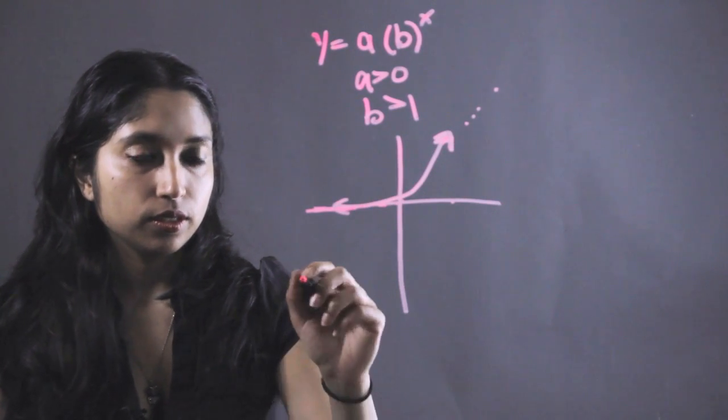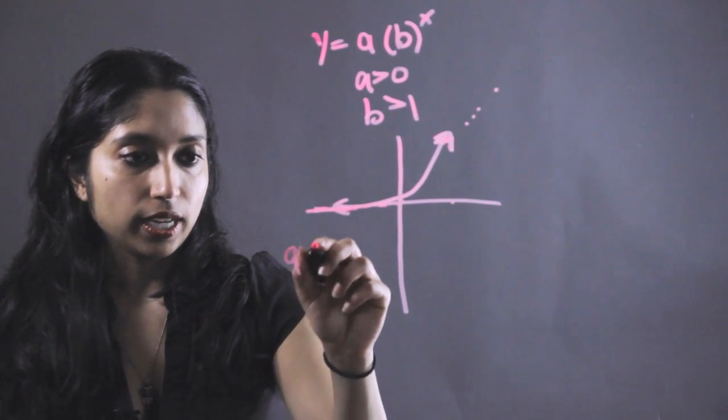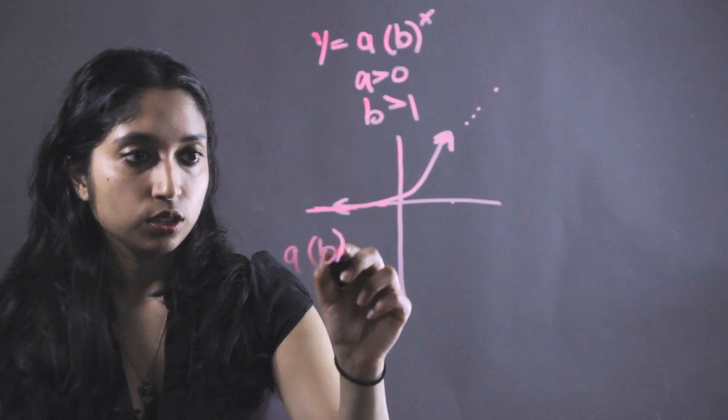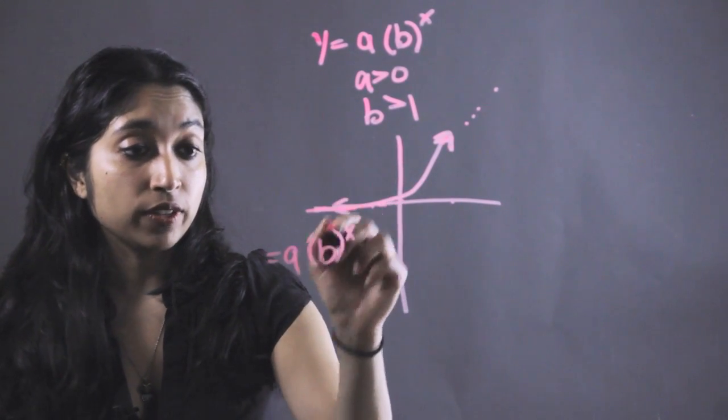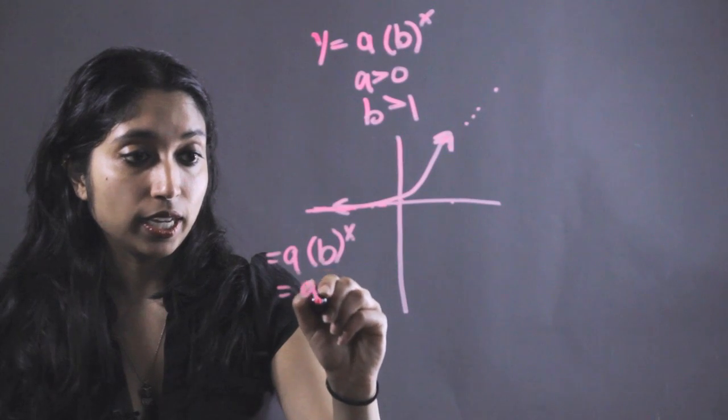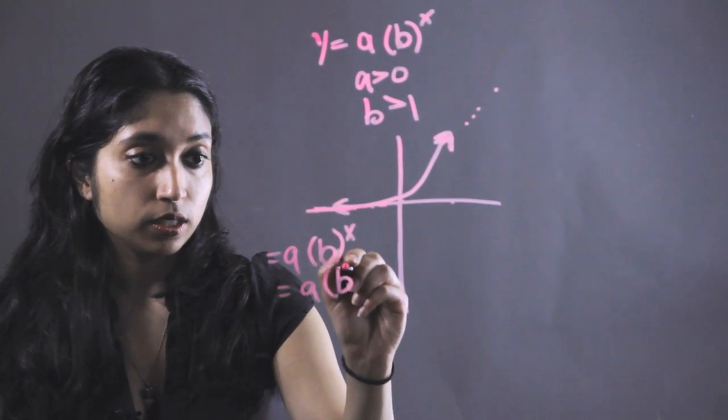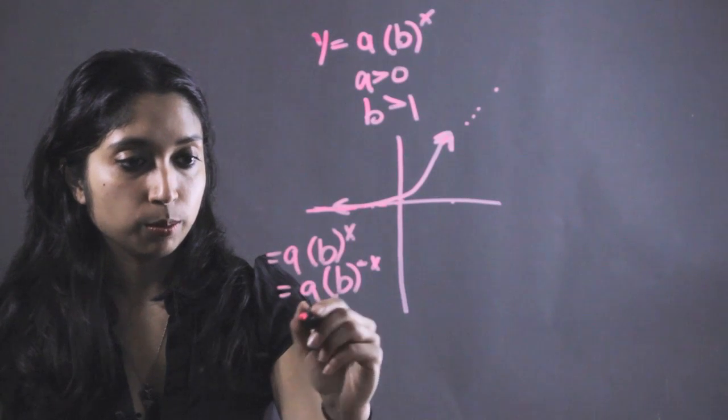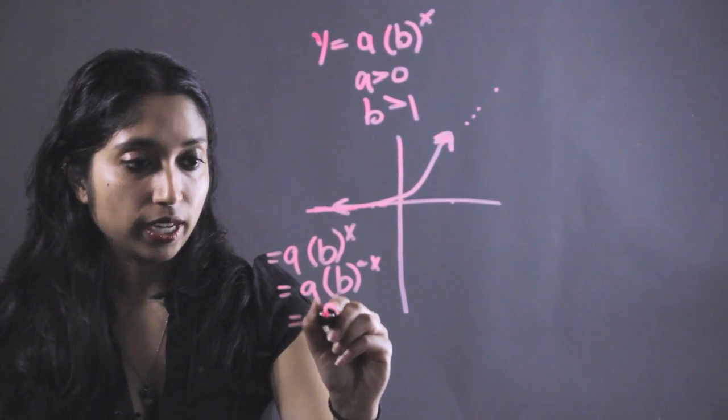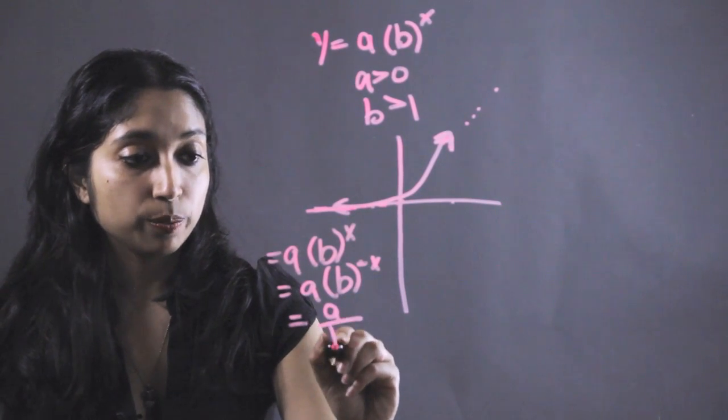So let's take a look at that. A times B to the X. Okay, that's what that is. Now, these are all negative X values. So this can be rewritten as A times B negative X, where X is now a positive number, A over B to the X.